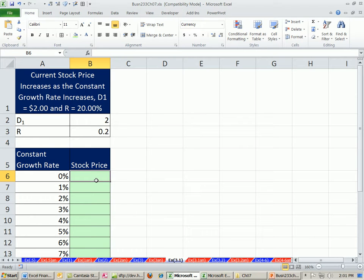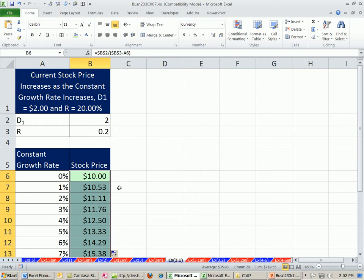And we build our little model here. It's always going to be the dividend at time 1, and I'm going to lock that with the F4 key, divided by open parentheses, R, assumed R, 20%. And I'm going to hit the F4 key, minus our growth rate. That'll be a relative cell reference. So as we copy down, that'll be the input that changes. Control-Enter, and then double-click and send it down.